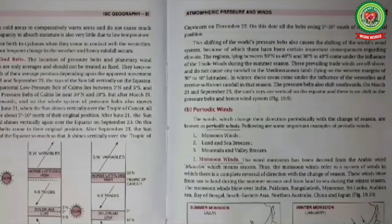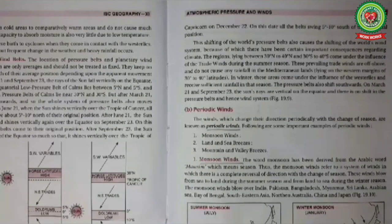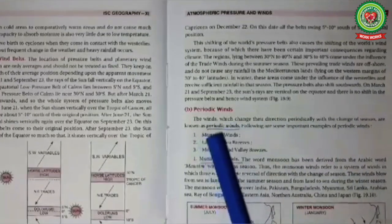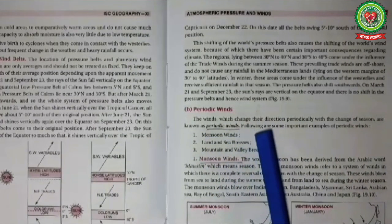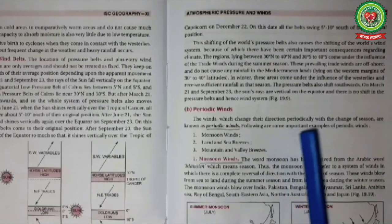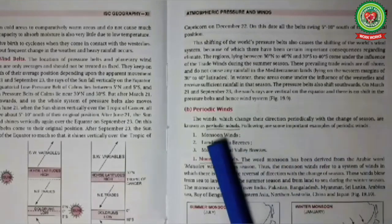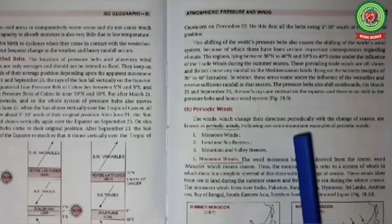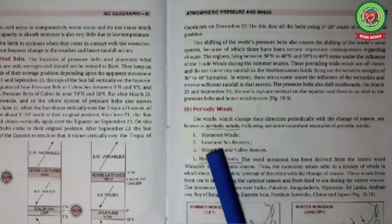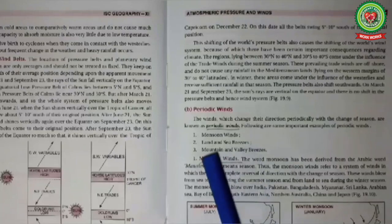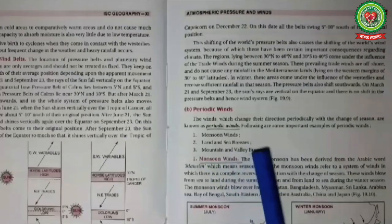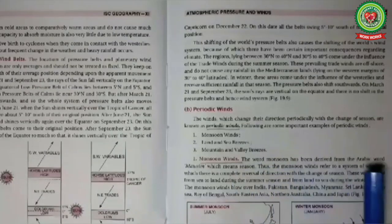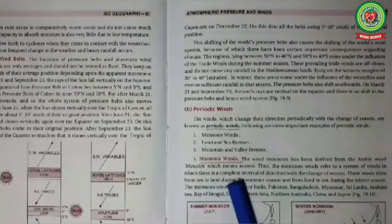Let us start the chapter from page 281. Periodic winds: the winds which change their direction periodically with change of season are known as periodic winds. Some examples of periodic winds are monsoon winds, land and sea breeze, and mountain and valley breeze. Now we will study monsoon winds first.